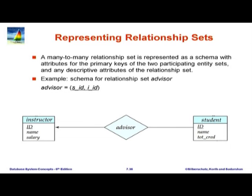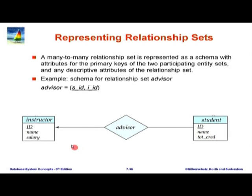Moving on to relationship sets: for any relationship set we take the primary keys of the entity sets it relates. Advisor relates student and instructor, so we create a relation containing student ID (renamed SID) and instructor ID (renamed IID). We have to choose a primary key. Since there is an arrow in the direction student to instructor — meaning a student cannot have more than one advisor — the primary key for the advisor relationship should be just SID. IID should not be part of the primary key.